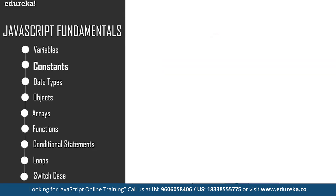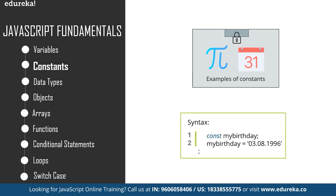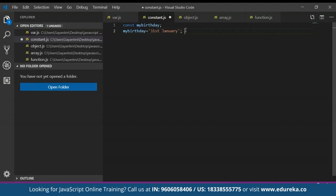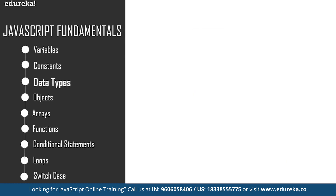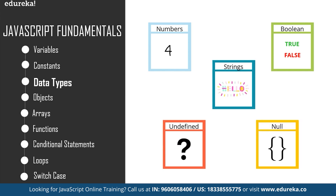Constants are fixed values that do not change during execution time. To declare a constant in JavaScript, we use the const keyword. So you just use the keyword const and then provide a constant value to that variable. JavaScript has two categories of data types: primitive and reference. For primitive types you have number, string, boolean, null, and undefined. For reference types you have objects, arrays, and functions.